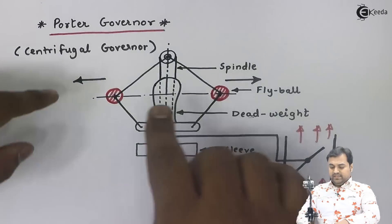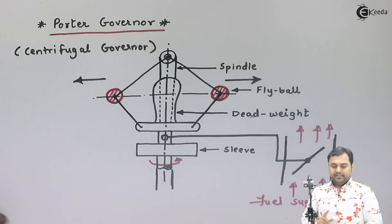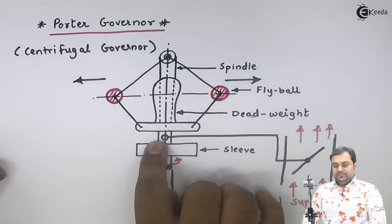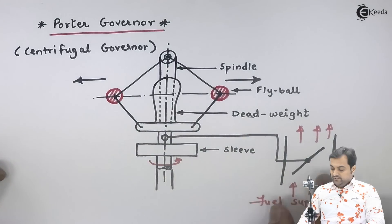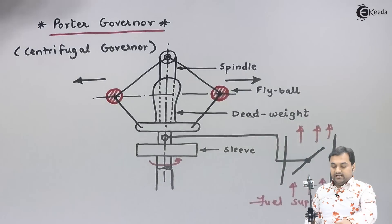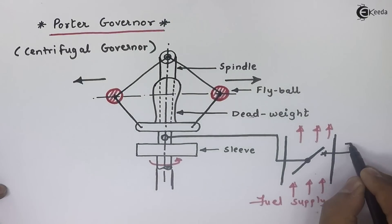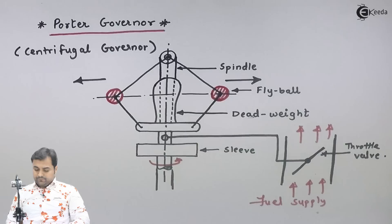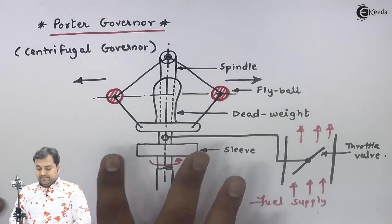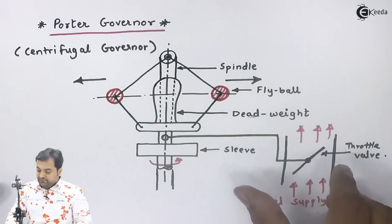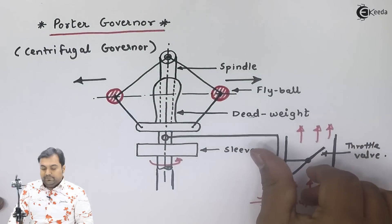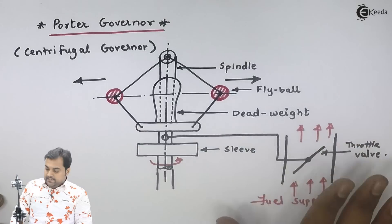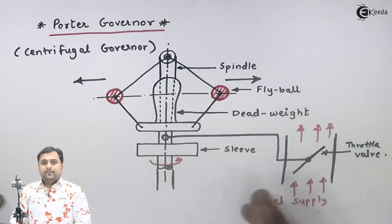When the engine speed increases, this spindle rotates, the sleeve moves up, and the fly balls move outwards. Because of that, here there is a connection — we have a bell crank lever. This would be closing the throttle valve. So when the engine speed increases, the sleeve moves up, and through the bell crank lever, the throttle valve closes this passage — that is, the supply of fuel is reduced.